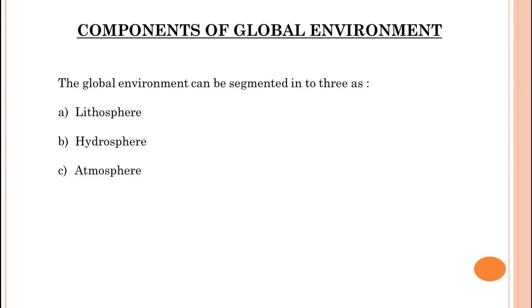Components of the global environment: the global environment can be segmented into three areas — lithosphere, hydrosphere and atmosphere.